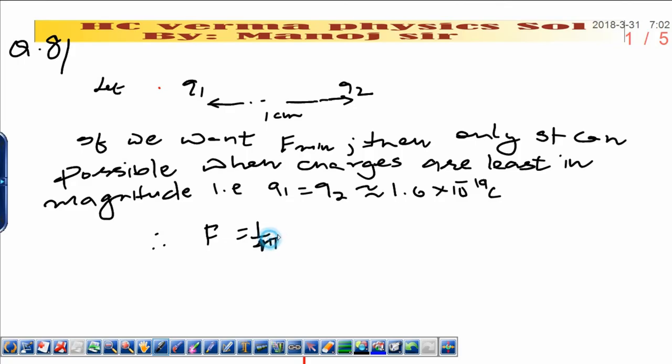It implies minimum force. You can write 9 × 10^9, which is the value of 1 by 4π epsilon naught, which is constant.